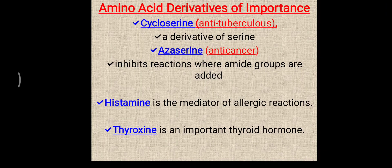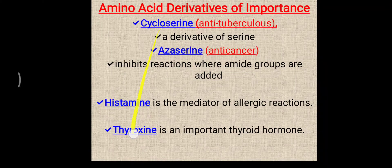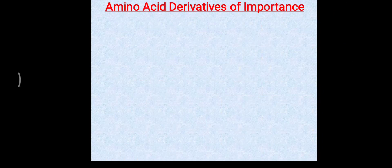Sometimes these topics are asked as MCQs. For example, if the question is: which one works as an anti-tuberculous drug — with options cycloserine, azaserine, histamine, and thyroxine — you have to select cycloserine. This type of MCQ or viva question can be asked from this point.